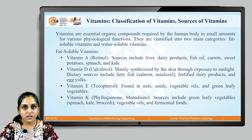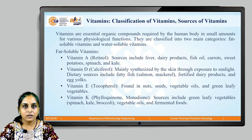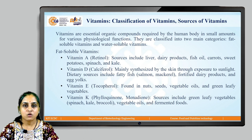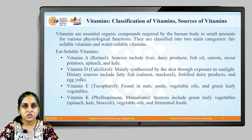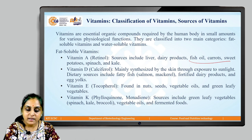Now let us move on to the next topic, which is vitamins — their classification and sources. Vitamins are essential organic compounds required by our body in very small amounts for various physiological functions. They can be broadly classified as fat-soluble vitamins and water-soluble vitamins. Starting with fat-soluble vitamins: Vitamin A, known as retinol, has sources including liver, dairy products, carrots, sweet potatoes, spinach, and kale.